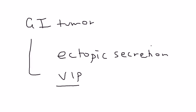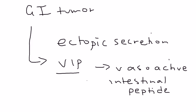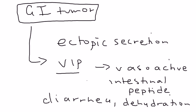VIP — vasoactive intestinal peptide — is the substance related to GI tumors, and it will produce symptoms. VIP produces diarrhea and results in subsequent dehydration. This is an example of a paraneoplastic syndrome. You initially have a tumor, that tumor results in a tumor-related ectopic secretion of VIP, and that VIP causes symptoms of diarrhea and dehydration.